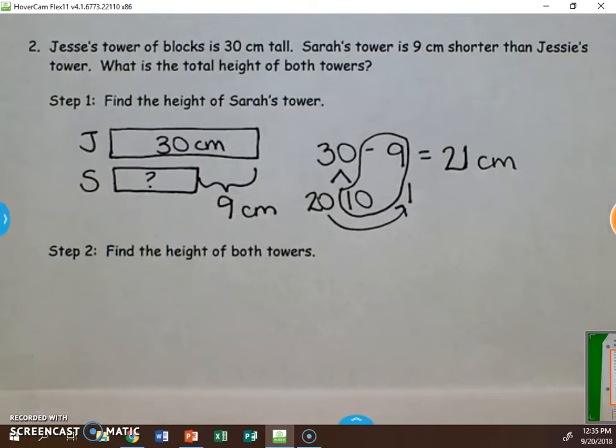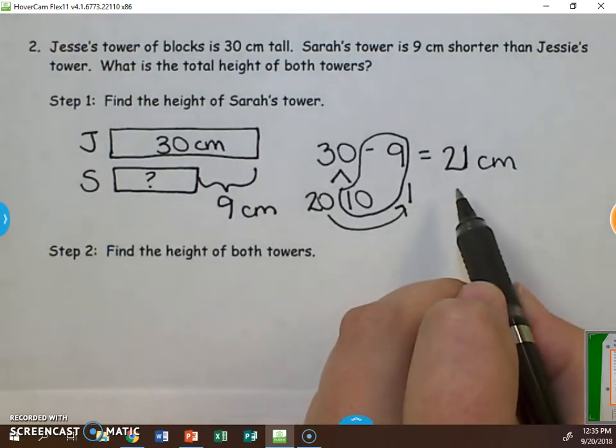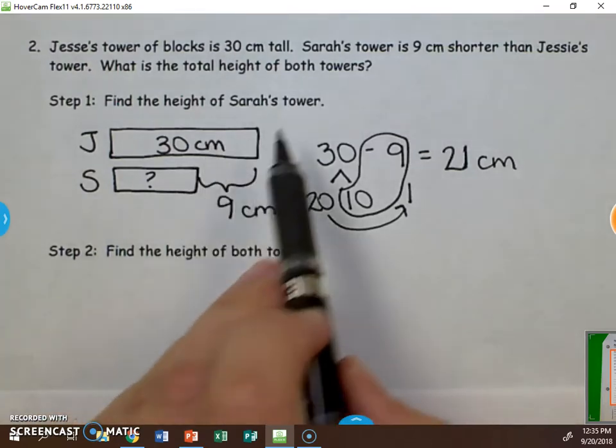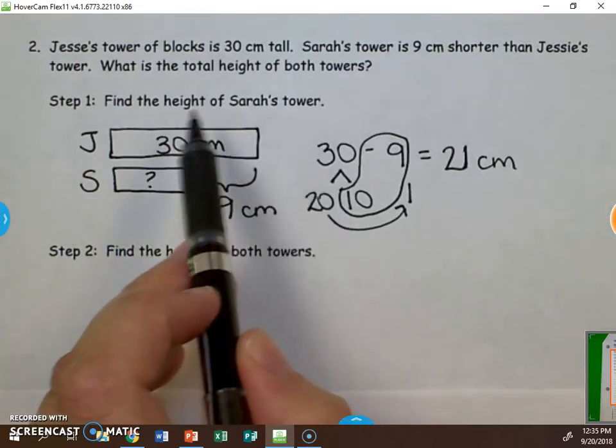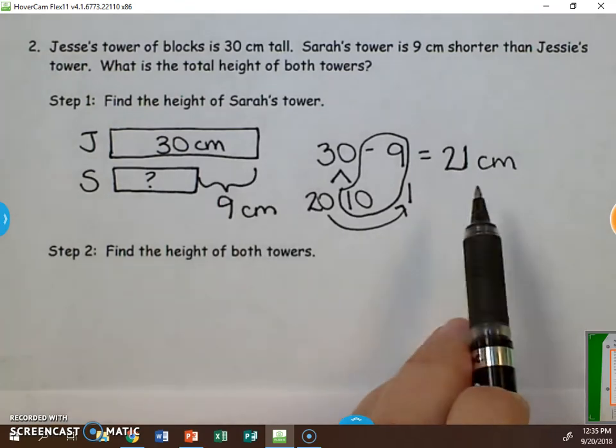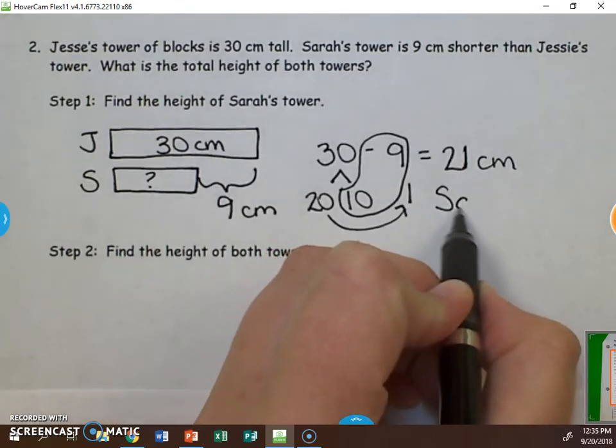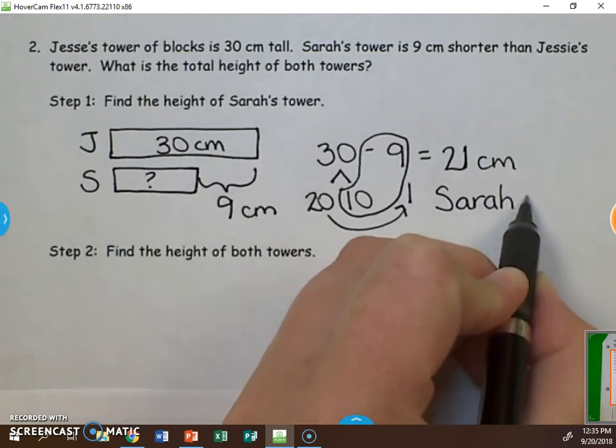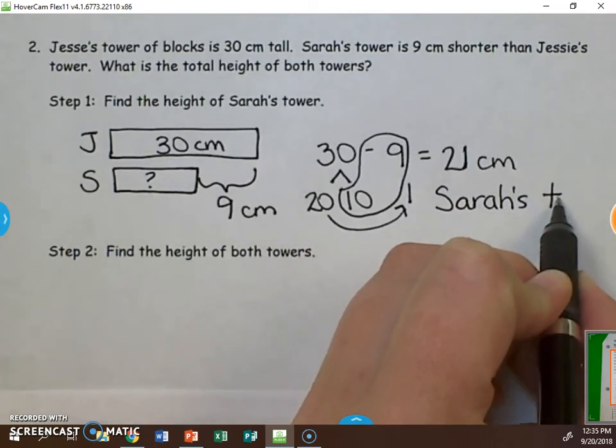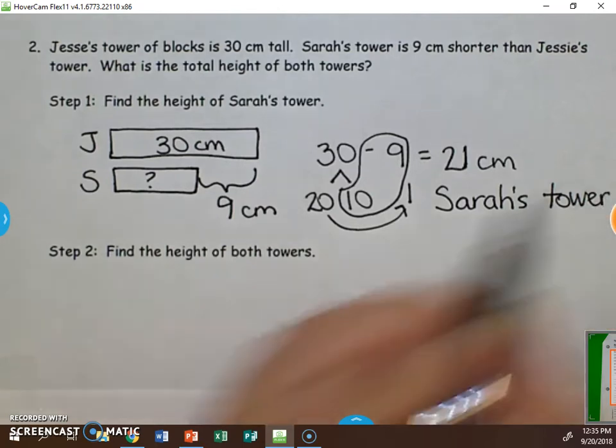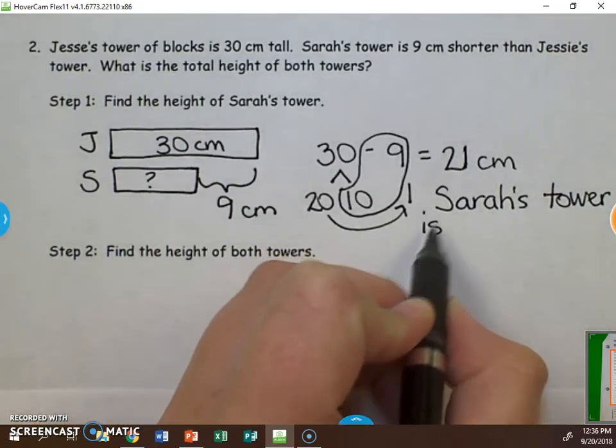So we now know that Sarah's tower is 21 centimeters tall. That's step 1. But in our read, draw, and write method, we also need to write a sentence to explain what this answer means. So we are talking about Sarah's tower and the height. And the height being 21 centimeters. So Sarah's tower is 21 centimeters tall.